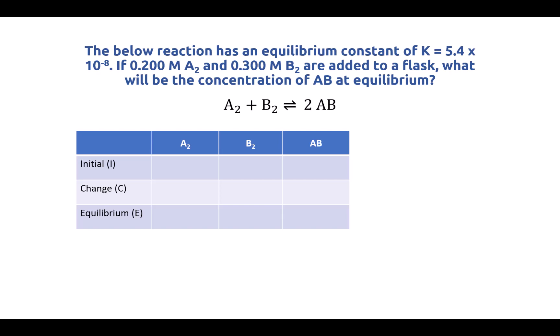So this question says, the below reaction has an equilibrium constant of K equals 5.4 times 10 to the minus 8. If 0.2 molar of A2 and 0.3 molar of B2 are added to a flask, what will be the concentration of AB at equilibrium? And in this question, we have an equilibrium that looks like A2 plus B2 is in equilibrium with 2AB.